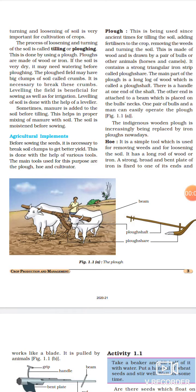Good morning students, this is the third video of this chapter, that is chapter 1 crop production and management. In the previous video we were discussing about the process of plowing and tilling, that is preparation of soil.